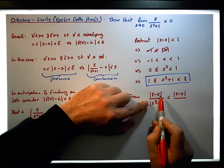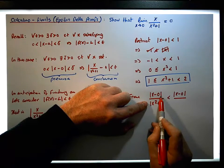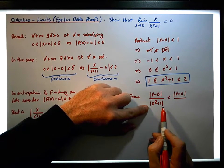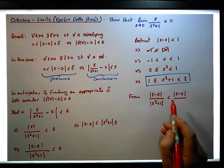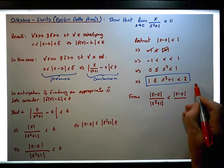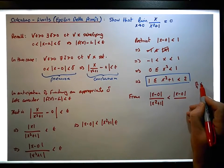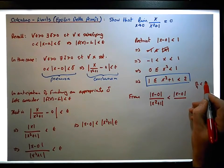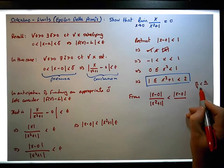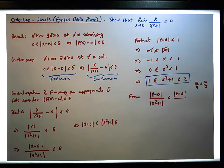So we have the absolute value of x minus zero all over the absolute value of x squared plus one. From a fraction perspective, if we take an amount and divide it by a larger number — say four — that's definitely going to be less than the same amount divided by a smaller number, say three. That's true when these are positive numbers.